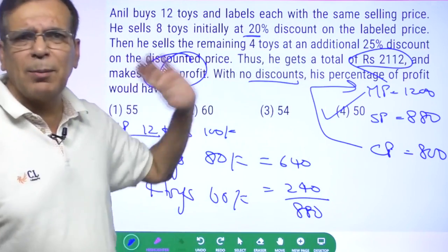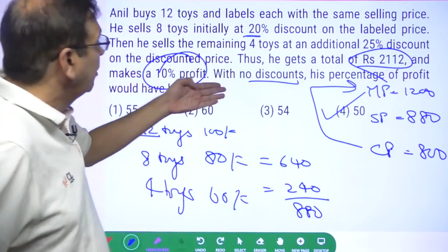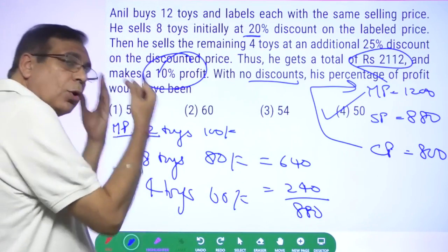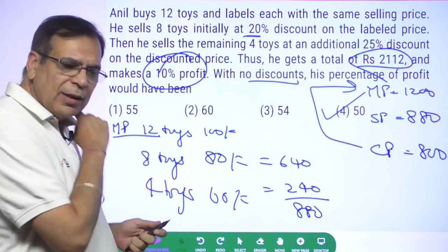So get used to ignoring numbers which are not relevant. If the answer is in percentages, almost all the data is in percentages, most probably that will not be required. Is this clear?